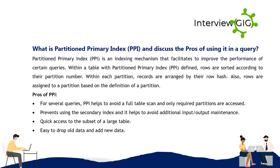What is Partition Primary Index (PPI) and what are the pros of using it in a query? Partition Primary Index (PPI) is an indexing mechanism that facilitates improved performance for certain queries within a table. With PPI defined, rows are sorted according to their partition number, and within each partition, records are arranged by their row hash. Rows are also assigned to a partition based on the partition definition.